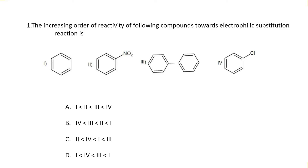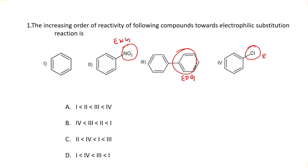Question number one: the increasing order of reactivity of the following compounds towards electrophilic substitution reaction. The first compound is benzene, the second is nitrobenzene which has an NO2 group which is electron withdrawing in nature, the third compound is biphenyl which has a phenyl group which is electron donating, and the fourth compound is chlorobenzene which has chlorine, also electron withdrawing. NO2 is a greater electron withdrawing group compared to chlorine.